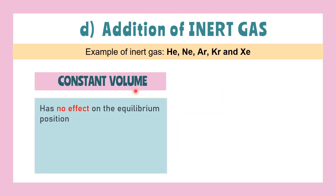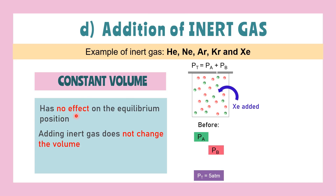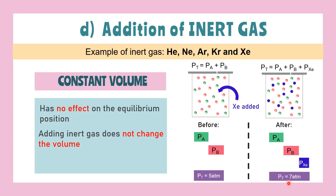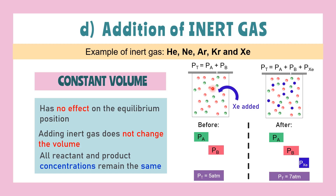Additions of inert gas at constant volume will have no effect on the equilibrium positions, due to the unreactive nature of the inert gas. They will only affect the total pressure of the gas, not the partial pressure of gas A or B. For example, before adding xenon we have 5 atm; after adding xenon we have 7 atm. As long as the volume remains unchanged, all concentrations of reactant and product will remain the same.